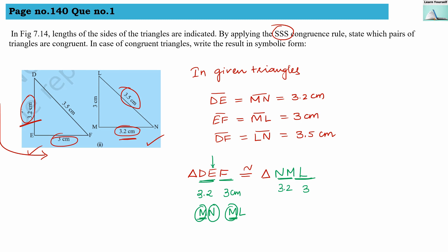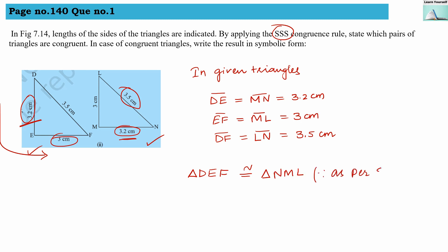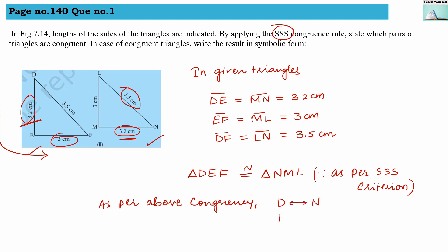Writing the name from the sides is a little tricky, but you can follow this pattern. Triangle DEF is congruent with triangle NML as per SSS criteria. We can also write: angle D is congruent with angle N, angle E is congruent with angle M, and angle F is congruent with angle L.